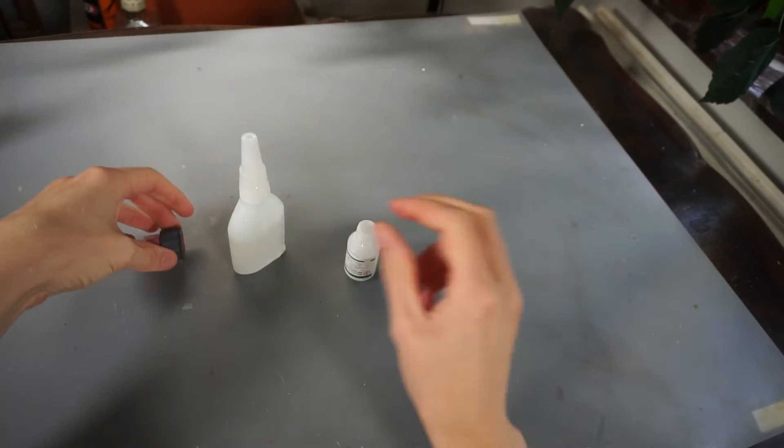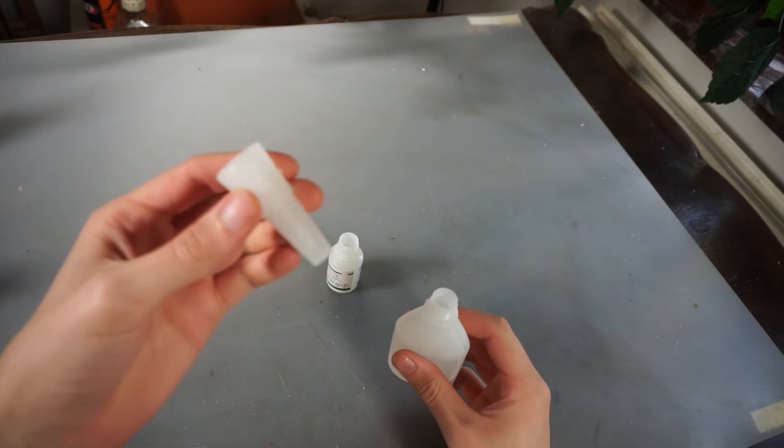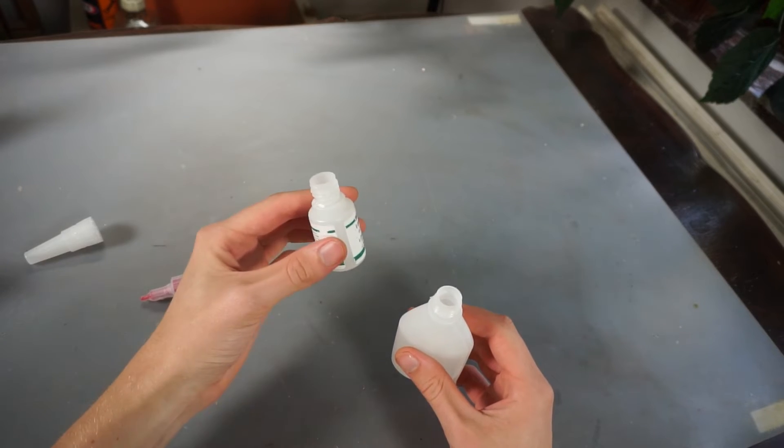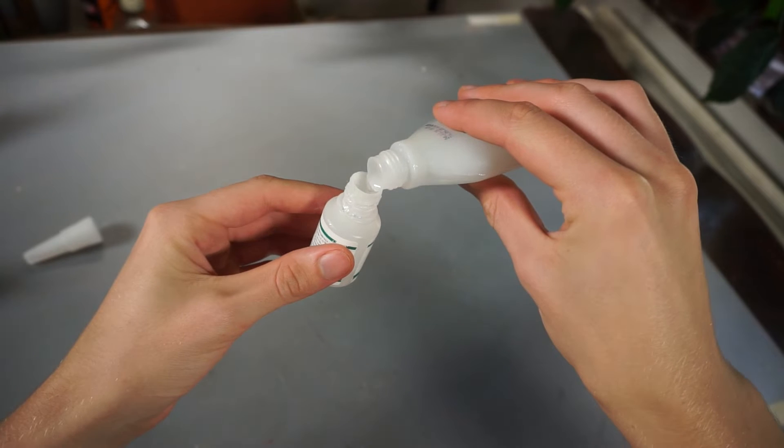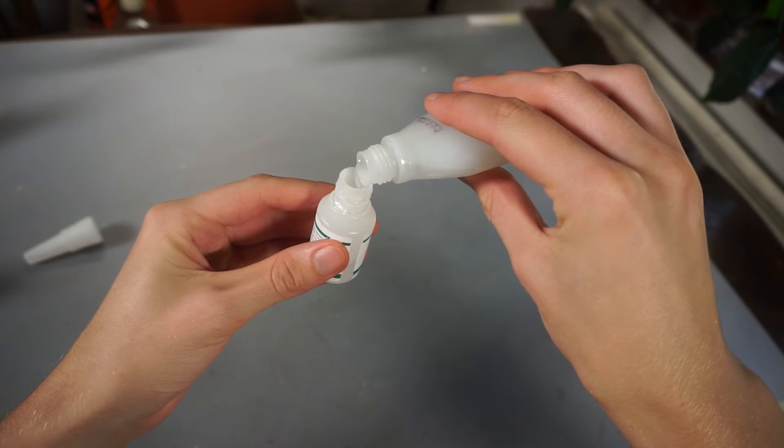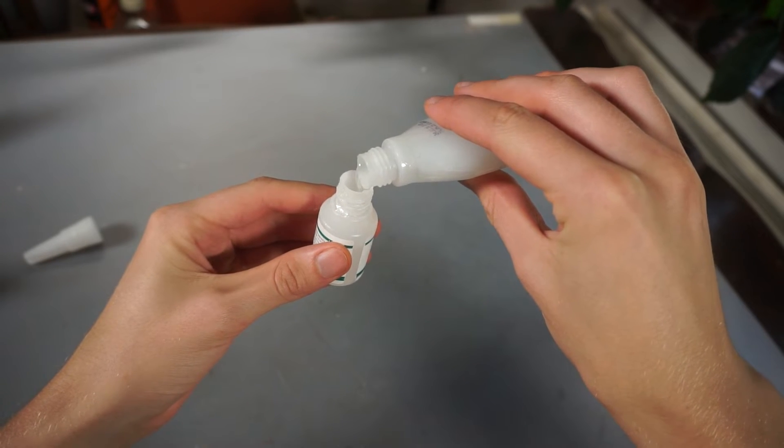We can put it in a smaller bottle to have more control and avoid ruining the nozzle. So if the smaller bottle were to dry out, it wouldn't be such a waste as the bigger one. We can just simply transfer the glue to this smaller flask, like so.